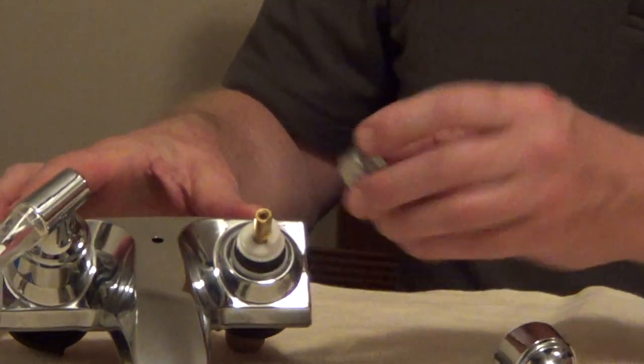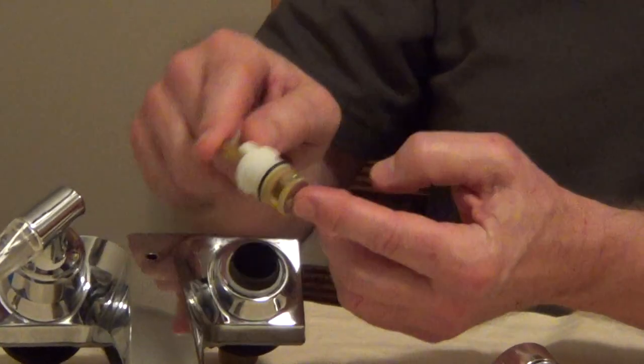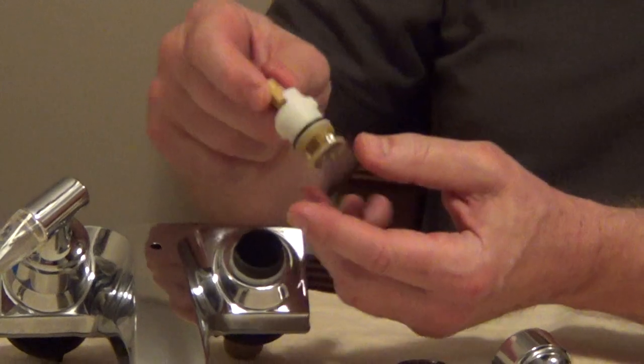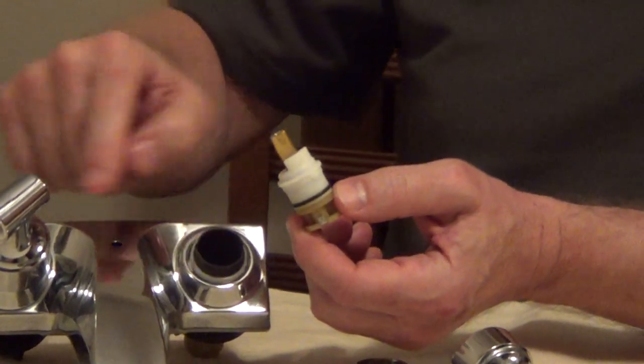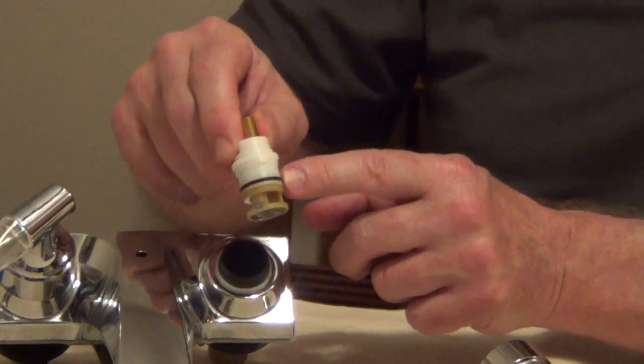Once you remove your nut, you can get to the cartridge. And so there's a couple things once we have this cartridge. If you're leaking out of the handle, if you have a slow drip and it's coming out of the handle, you're going to replace the O-ring.